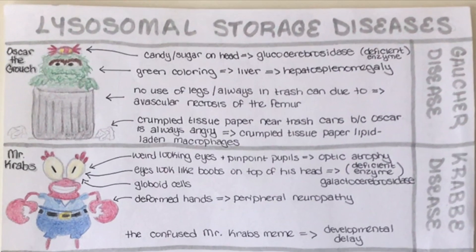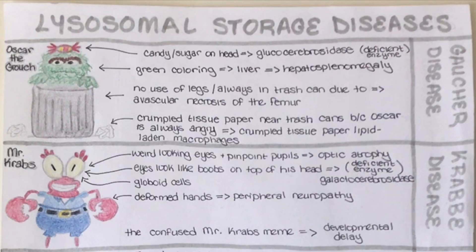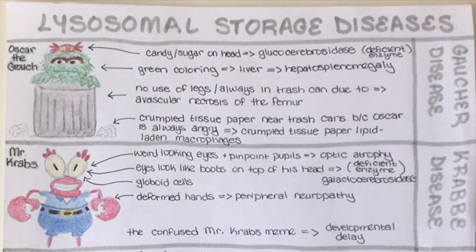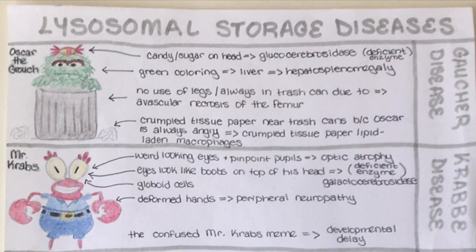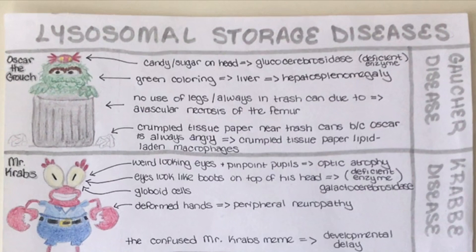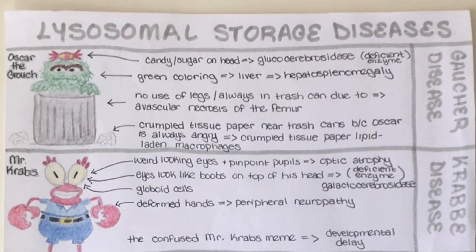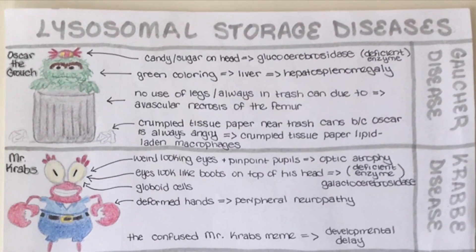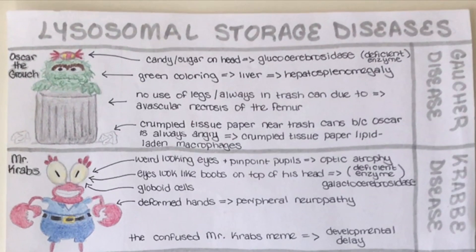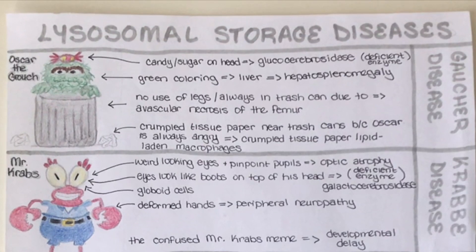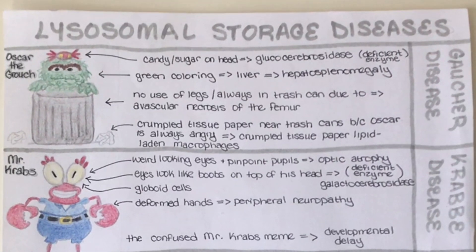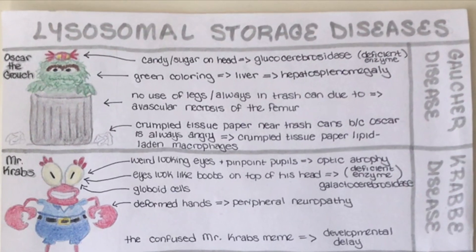Next we have Krabbe disease, and we're using Mr. Krabs. The looking eyes with pinpoint pupils drawn on Mr. Krabs help us remember the optic atrophy seen in Krabbe disease. His eyes also look like boobs on top of his head, helping us remember the deficient enzyme galactocerebrosidase — galacto meaning milk, milk comes from boobs. The shape of the eyes drawn here also helps us remember the globoid cells seen in Krabbe disease.